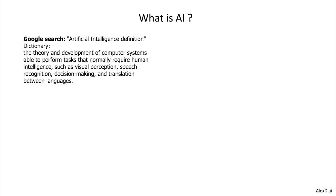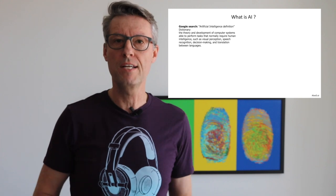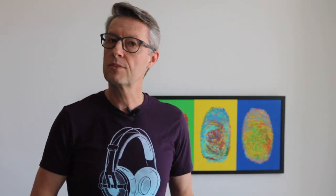If you Google AI, or search for the definition of artificial intelligence, you will see that it is the theory and development of computer systems able to perform tasks that normally require human intelligence, such as visual perception, speech recognition, decision making, or translation between languages. This is a complex definition of what AI is.